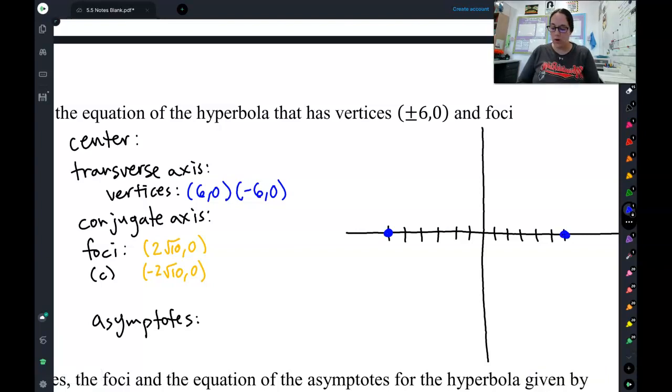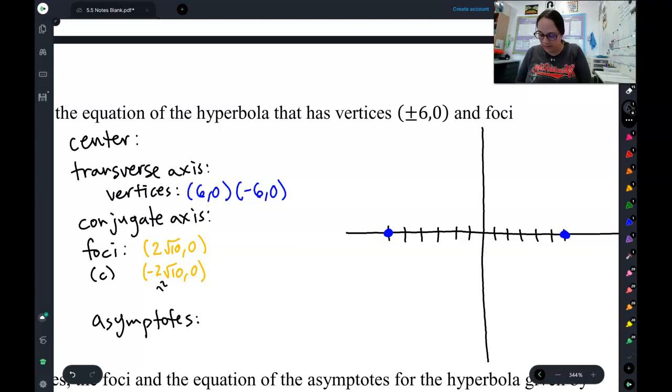And I have my foci at 2 square roots of 10 and then negative 2 square roots of 10, which is about 6-ish, a little more than 6. Let me look it up real quick. So at 6.32 and negative 6.32, those are our foci.